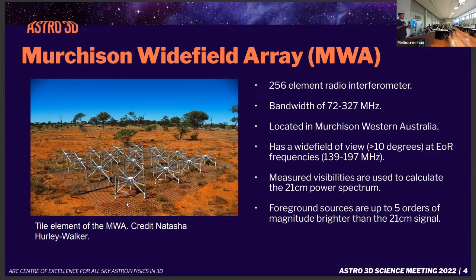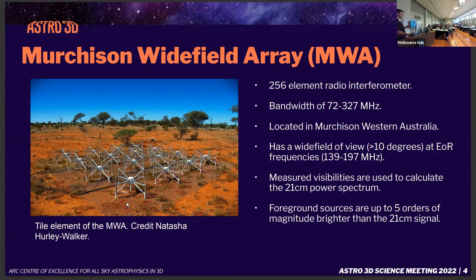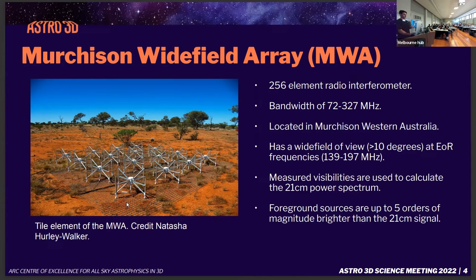However, interferometers don't just see the EOR signal — they also see intervening foreground sources like extragalactic radio sources in the galactic plane. These can be up to five orders of magnitude brighter than the expected 21 centimeter signal, and they need to be removed from our data if we want to retrieve that signal.